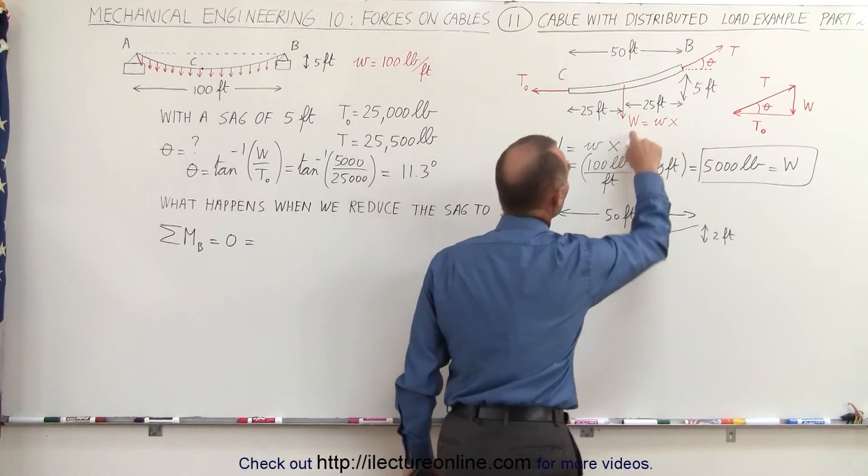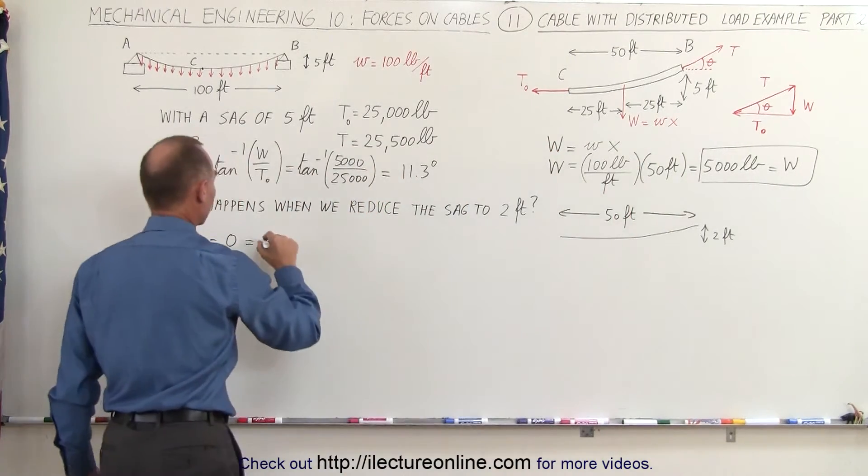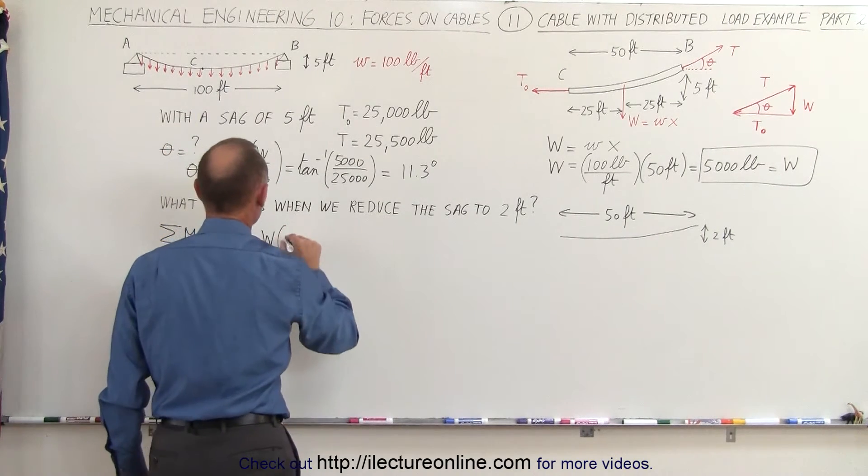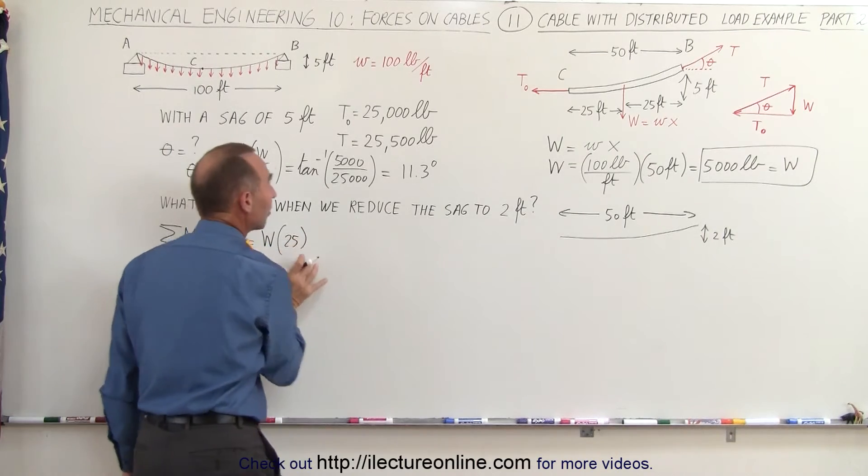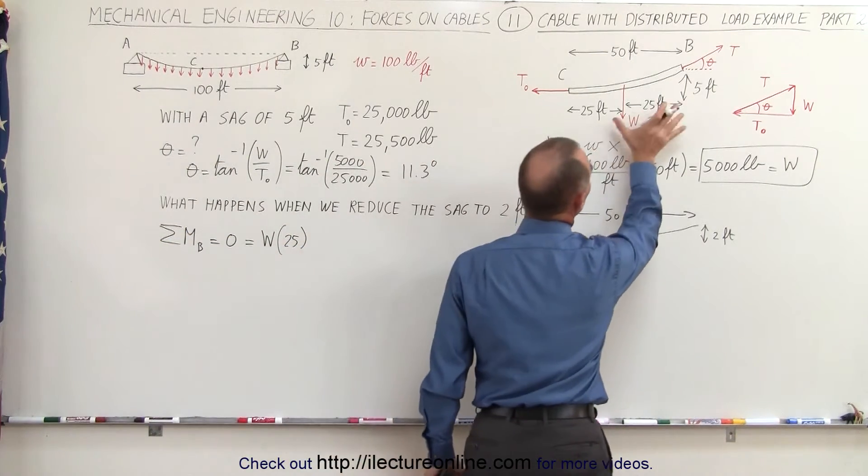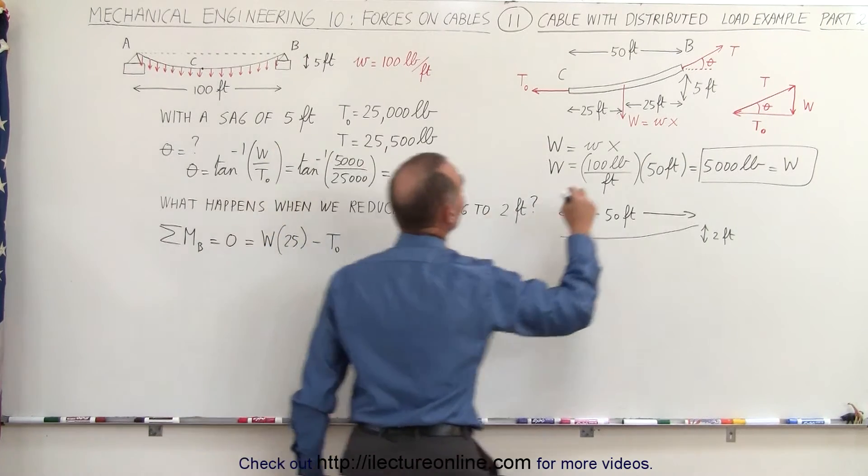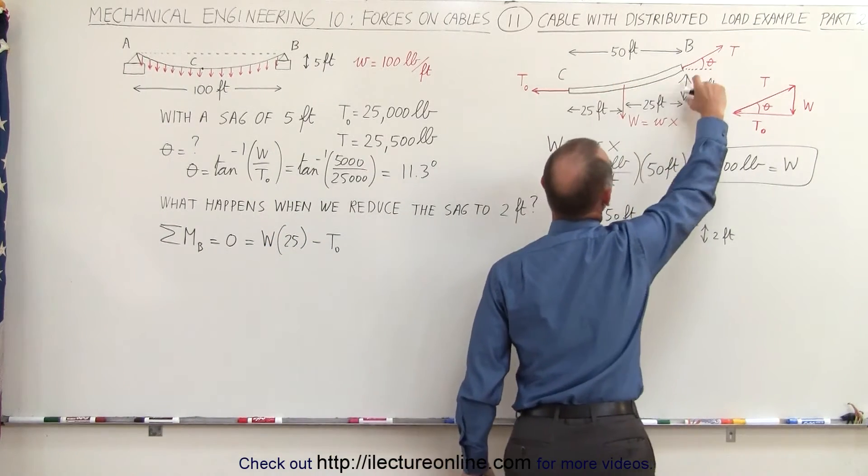So first of all, again we can take the load here. That hasn't changed, that's equal to the load. It'll be a positive moment because it's counterclockwise, times the distance of 25 feet. None of that has changed, it's still the load times 25 feet. But now we go minus T sub not, and the distance now from the line of action of T sub not, instead of five feet, is now reduced to two feet.